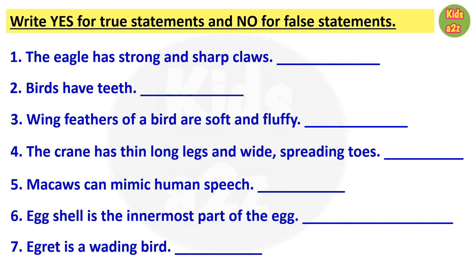In this worksheet kids need to write yes for each true statement and no for false statements. Number 1, the eagle has strong and sharp claws — that is true, so kids need to write yes. Number 2, birds have teeth — that is false, so the answer is no. Number 3, wing feathers of a bird are soft and fluffy — this one is false, because wing feathers are long and strong.